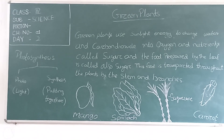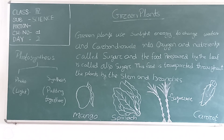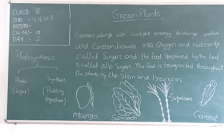A plant uses some amount of the prepared food to carry out its life processes, while the rest of the food is stored in fruit, leaves, stem or roots. We consume each part of a plant.